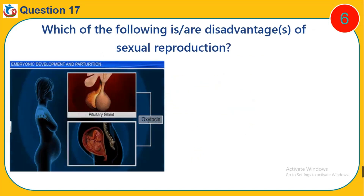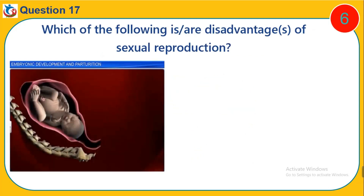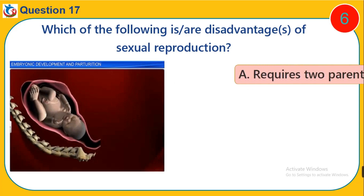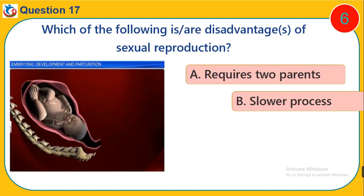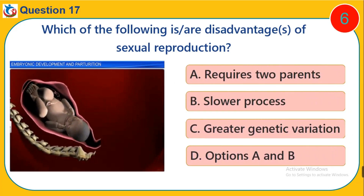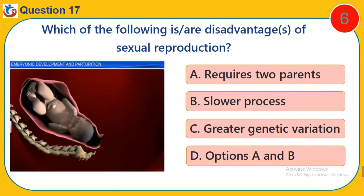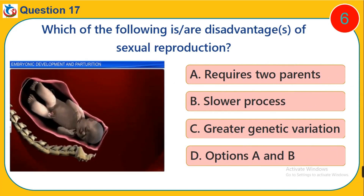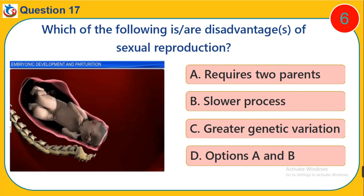Question 17. Which of the following is or are disadvantages of sexual reproduction? A. Requires two parents. B. Slower process. C. Greater genetic variation. D. Options A and B.